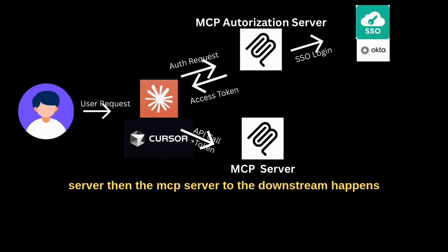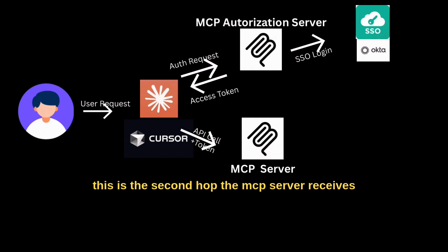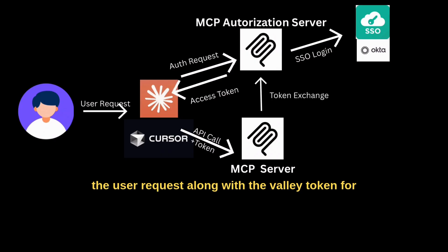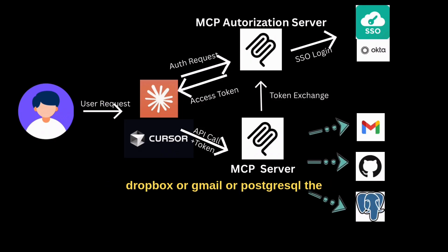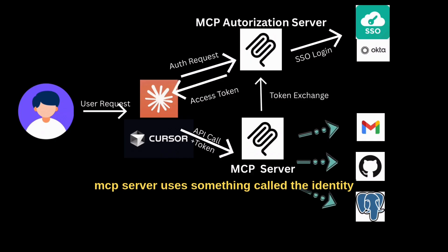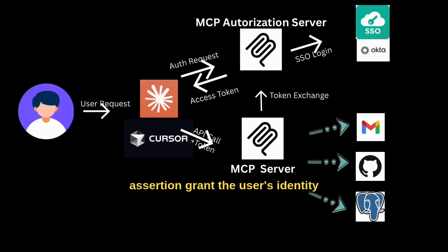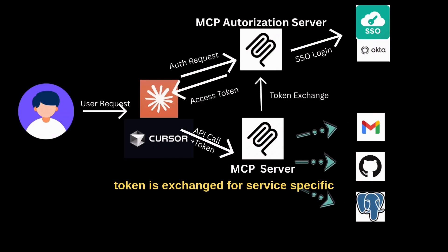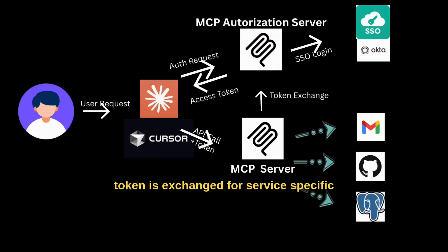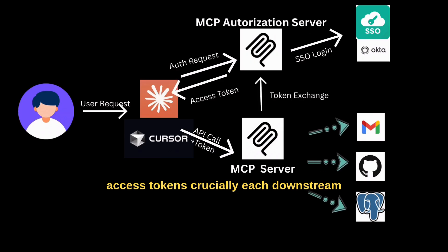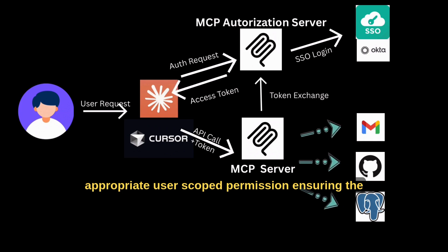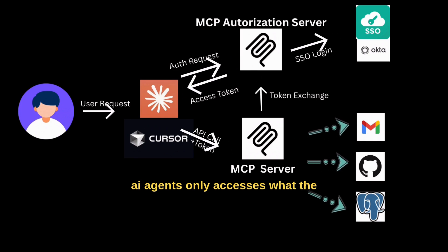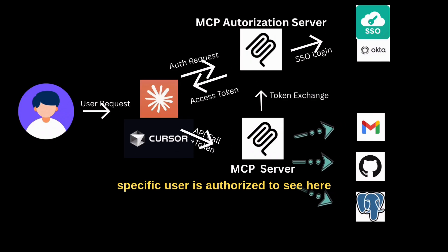Then MCP server to downstream — this is the second hop. The MCP server receives the user request along with the valid token. For any downstream API calls to services like Dropbox, Gmail, or PostgreSQL, the MCP server uses something called the Identity Token Exchange Grant. The user's identity token is exchanged for service-specific access tokens. Crucially, each downstream call then uses appropriate user-scoped permissions, ensuring the AI agent only accesses what the specific user is authorized to see.